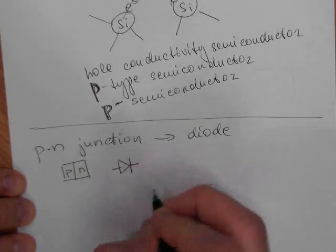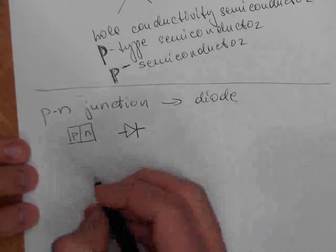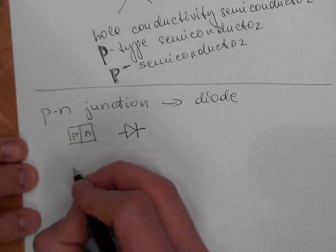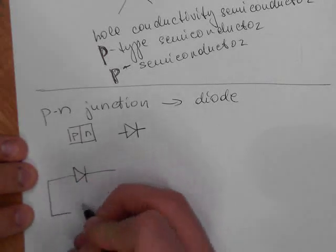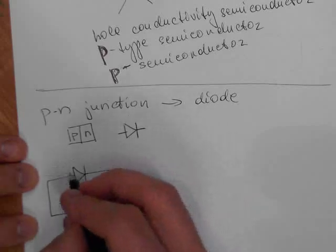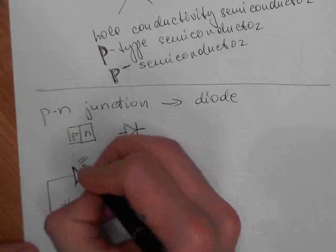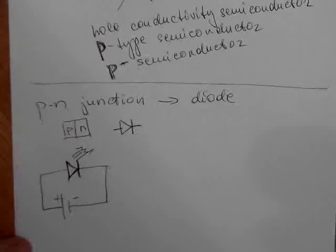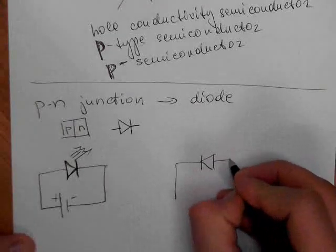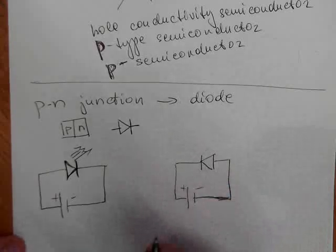When the P side is connected to positive and N to negative, the diode is forward biased — in our lab case it was emitting light and it was working. When it is connected the other way — P to negative, N to positive — that is reverse biasing, and the diode does not conduct.